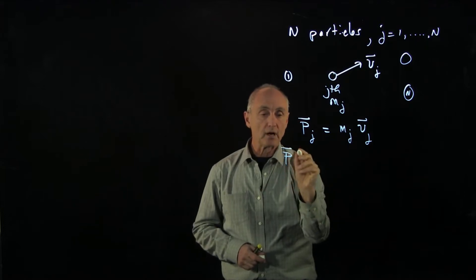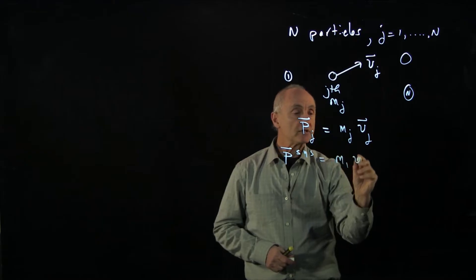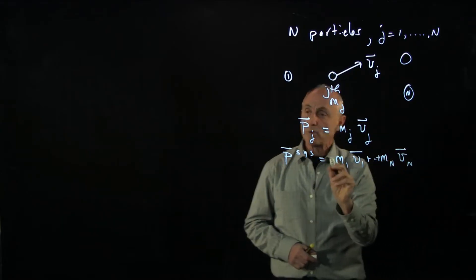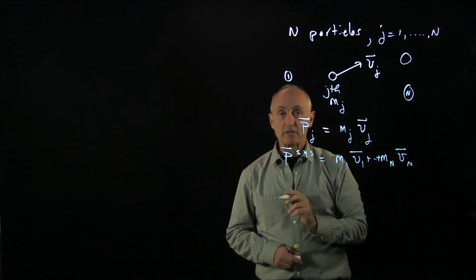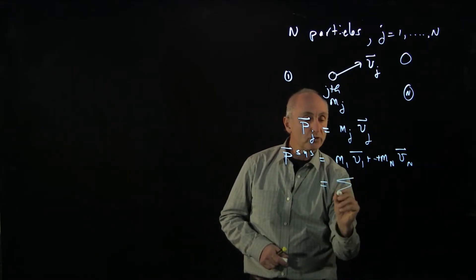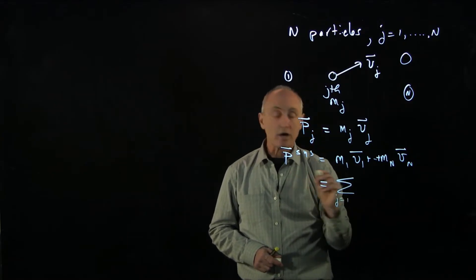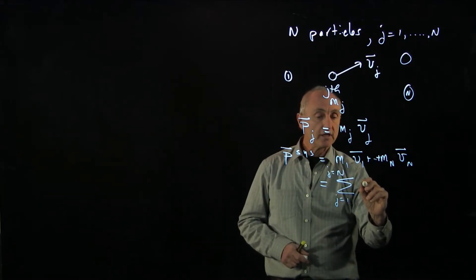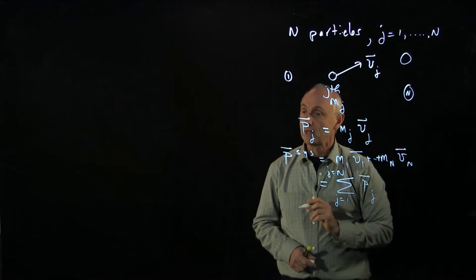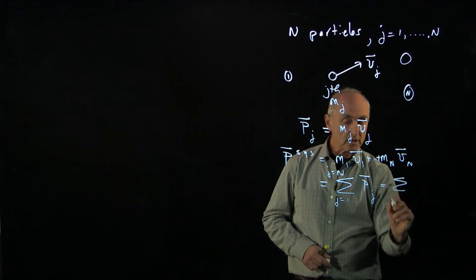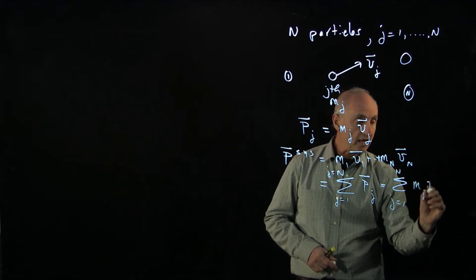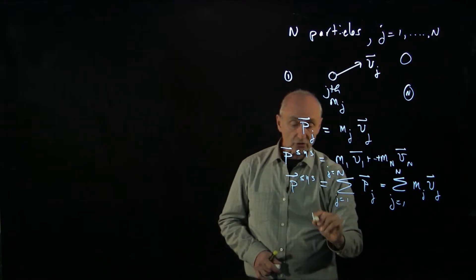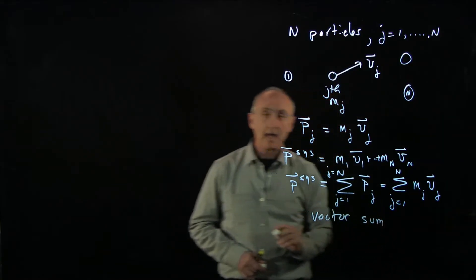So the total momentum of the system, we now have to add up the momentum of all the particles, all the way up to the n-th particle. Now, when we make a sum like this, there is a standard mathematical summation notation, which we'll write like this. We'll do the sum, this capital sigma sum, of j goes from 1 to j goes to N, of the momentum of the j-th particle. And that represents the sum j goes from 1 to N, of mj vj. And this is what we call the momentum of the system. This is a vector sum.